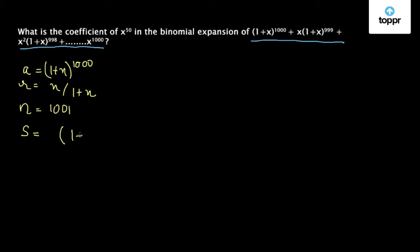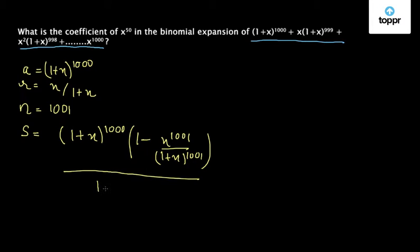Now the sum of the series would be: a times (1 - r^n) divided by (1 - r), which is (1 + x)^1000 times (1 - (x/(1 + x))^1001) divided by (1 - x/(1 + x)).